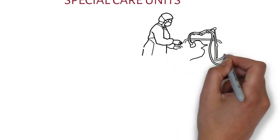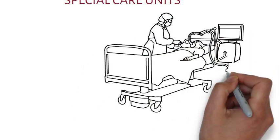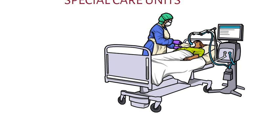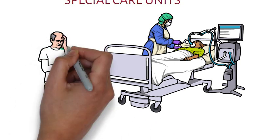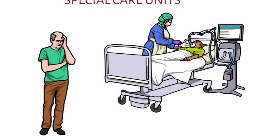In the intensive care units and special care units there is a higher likelihood of many kinds of drug related errors. There are many reasons for such errors. Patients are usually very sick and are on multiple drugs at high dosages. As the patient's responses change, the drugs and the dosages will also change. Often the patients and their relatives will not be able to corroborate or contribute important information.